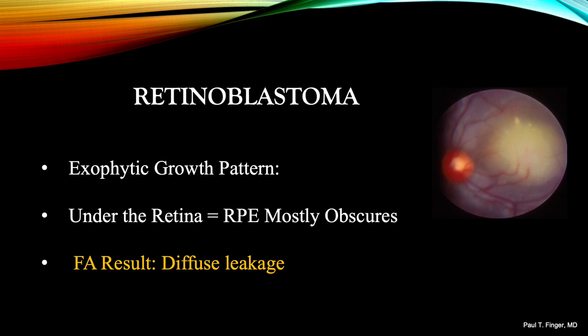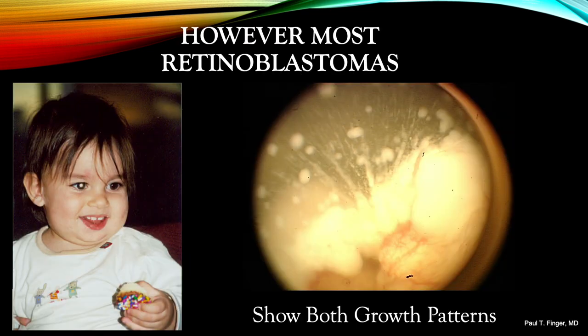In contrast, exophytic rests of retinoblastoma will be covered by the retinal pigment epithelium, so there is no chance to view the tumor's circulation. Instead, we will see diffuse hyperfluorescence above the tumor and, to a lesser degree, from its associated serous retinal detachment. Most retinoblastomas, somewhat dependent upon where you practice and the timing of diagnosis, present with both endophytic and exophytic growth patterns as well as vitreous seeds.